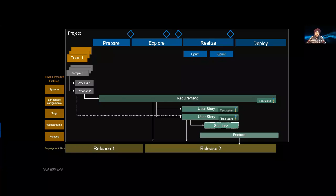Cross-project entities include: landscape assignments and system groups — which systems or system groups are used in which projects. Tags are created in the context of a project but become available for all other projects to use. A tag can be assigned whatever value you want and can be assigned to many entities harmoniously — requirements, features, test cases — enabling tag-based traceability. For example, define a tag called 'Plant Berlin' and get a cross-object view showing where your Plant Berlin requirement, user story, and feature are.